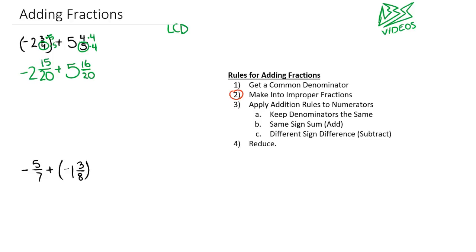Step 2 is technically optional, but to avoid some interesting areas, we're going to make them into improper fractions. The quick way is to multiply 2 times 20 to get 40, then add 15. So 40 plus 15 is 55.